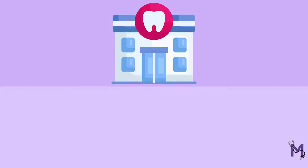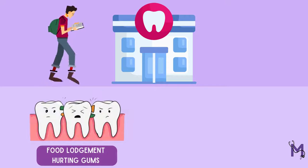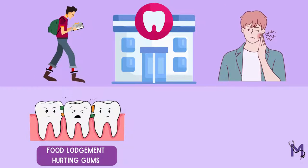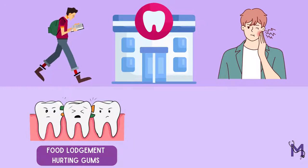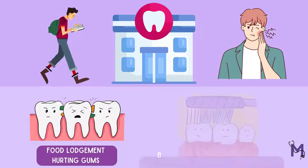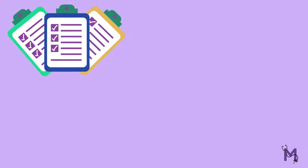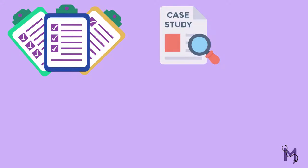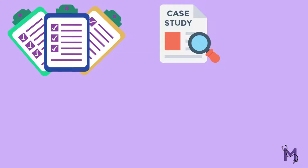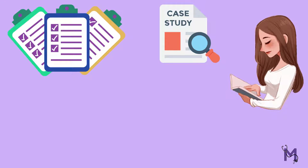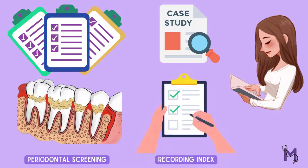Consider a case scenario where a patient walks into your clinic complaining of food lodgment in his upper left back tooth region and pain in his gums. He also complains of bleeding gums during brushing. As we have discussed in our previous videos, there are several indices which can be used in this case, but today we will learn how to apply the periodontal screening and recording index to this case.